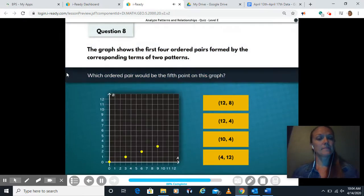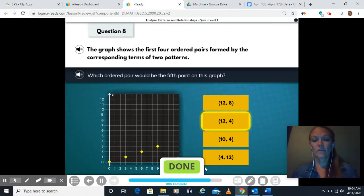All right, and our last question here. The graph shows the first four ordered pairs formed by the corresponding terms of two patterns, and we're figuring out what would be the next ordered pair. What would be the next thing on the graph? So I started at zero. We went over one, two, three. So we have add three, and then we added one. So then we have, they went over three from three to six, and then up one. Added three, up one. Added three, up one. So where are we at? We are at twelve and four. You should end up at twelve, four.